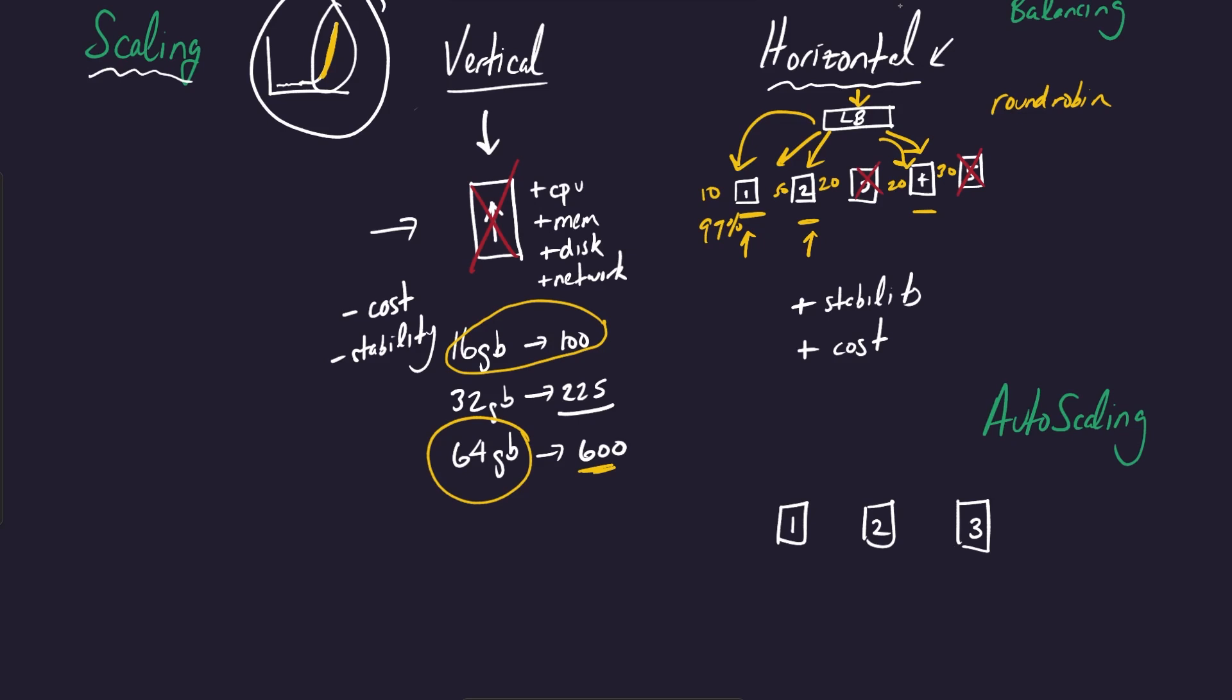Now, initially when you set up autoscaling, you may say, okay, three instances looks good for me. This is something reasonable that I can start with.